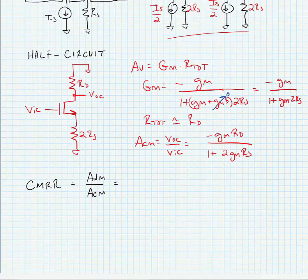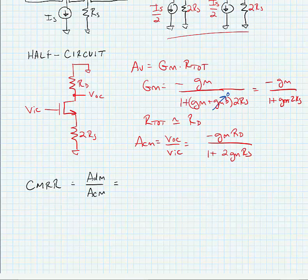Now if we remember our common mode rejection ratio, how well our amplifier amplifies differential signals compared to how it amplifies common mode signals is equal to ADM divided by ACM. If we use ADM from our last lecture slides we know that it was minus gm RD and if we divide this by ACM that we just found,